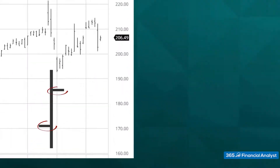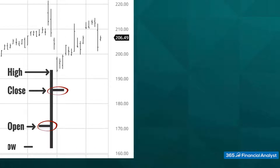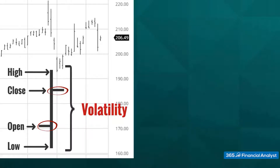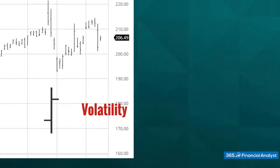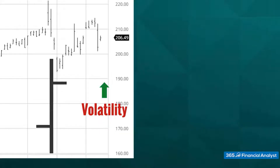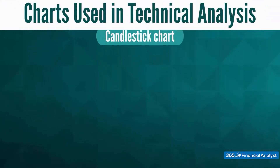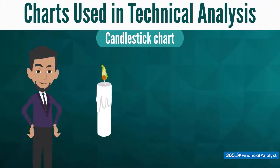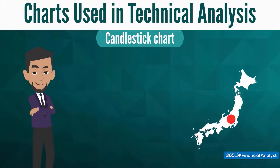The tiny lines sticking out on each side of the vertical bar are the opening and closing prices. Reading from left to right, the top and bottom of the bar represent the highest and lowest price of the stock. The height of the vertical bar represents the volatility — the shorter the bar, the lower the volatility; the longer the bar, the higher the volatility.